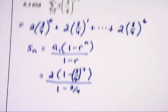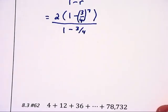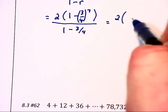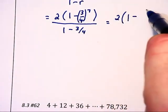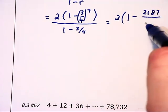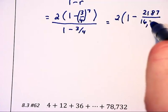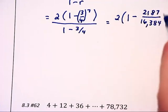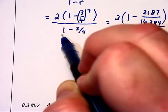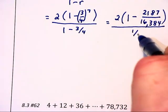Let's figure this out a little bit further. This is going to equal 2 times 1 minus 2,187 over 16,384, all of which is going to be divided by 1 minus 3 quarters, which is 1 quarter.